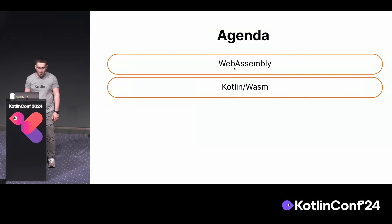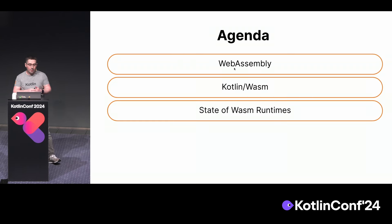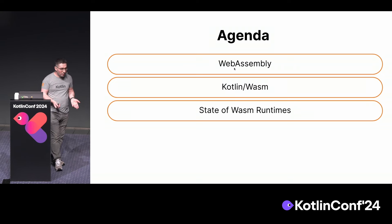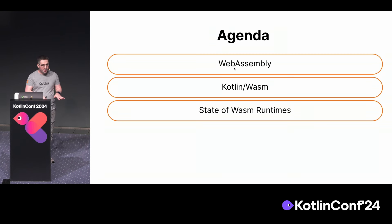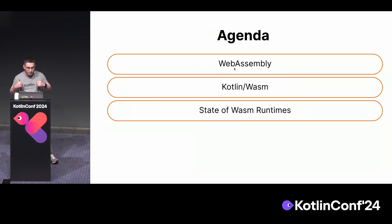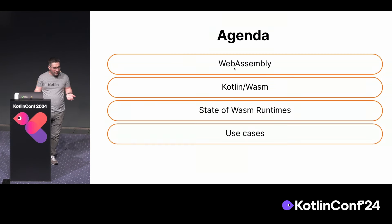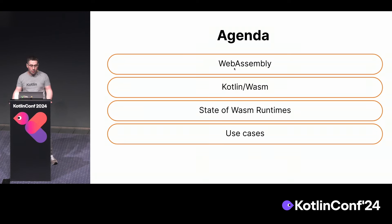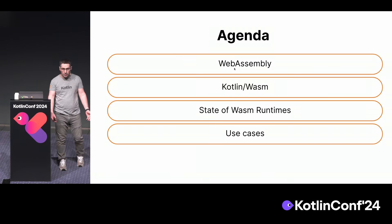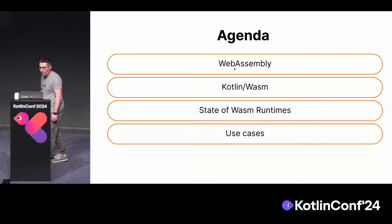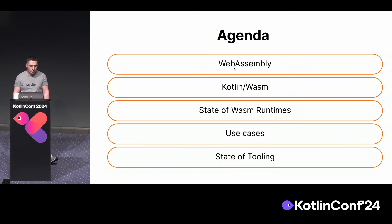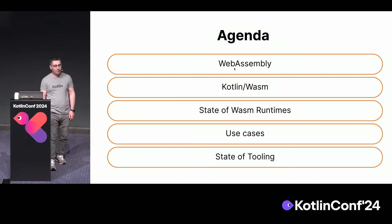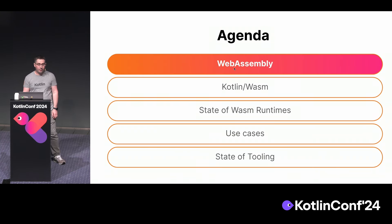Then we switch to Kotlin Wasm and look at what Kotlin Wasm brings to us. We will look at Wasm runtimes — there are a lot of them — but in this section we will focus on Kotlin's needs in case of Kotlin Wasm. Later, we'll speak about Kotlin and WebAssembly use cases, see Kotlin Wasm in action, and finish by looking at the state of tooling. Let's move on and start with WebAssembly.